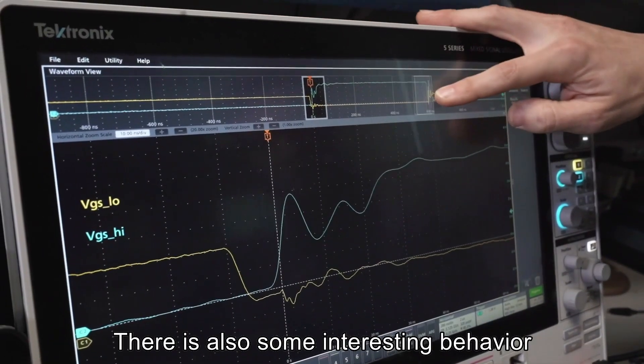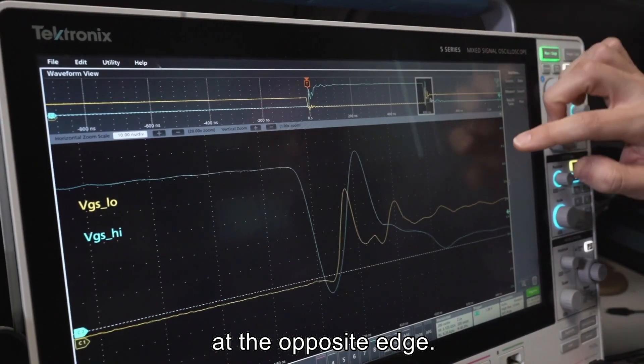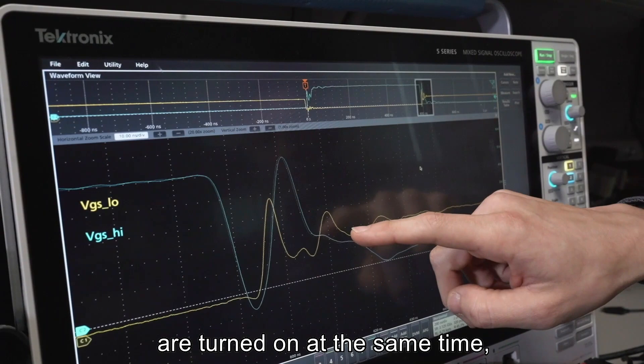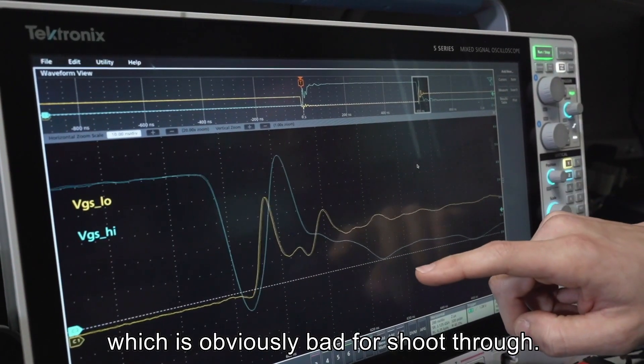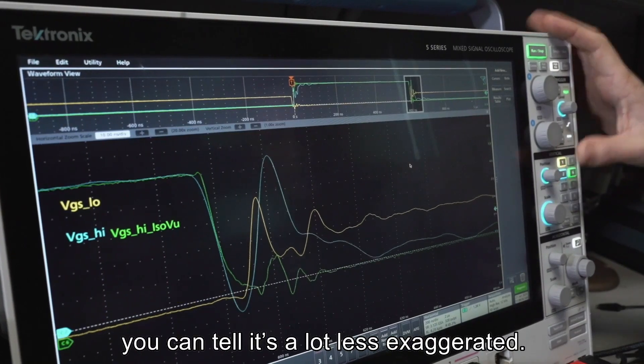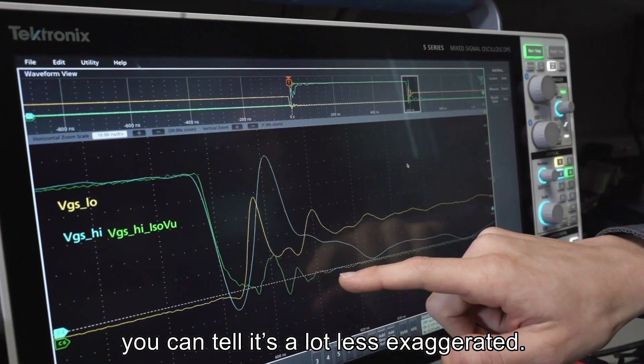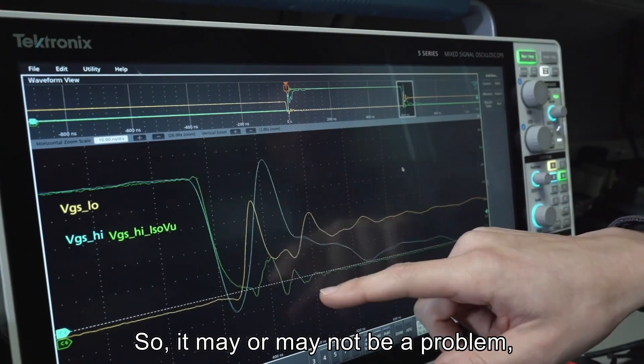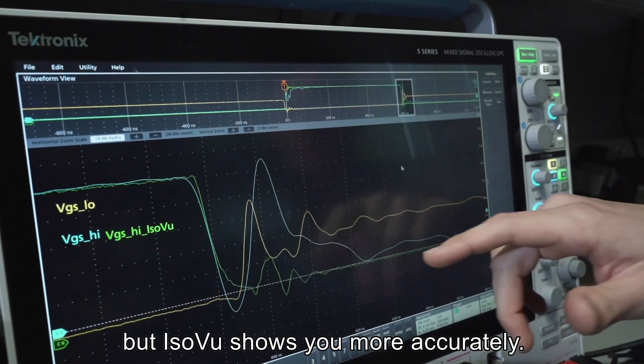There's also some interesting behavior at the opposite edge. You can see it looks like both gates are turned on at the same time, which is obviously bad for shoot-through, but with IsoVu, you can tell it's a lot less exaggerated. So it may or may not be a problem, but IsoVu shows you more accurately.